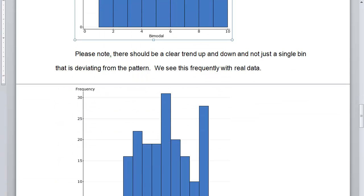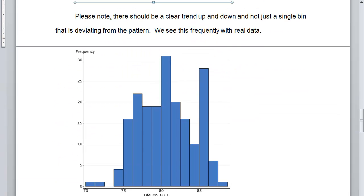So again, I'm going to reiterate, please note, there should be a clear trend up and down and not just a single bin that is deviating from the pattern. We see this frequently with real data.